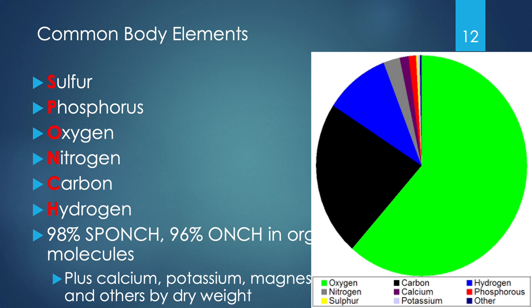This slide gives a breakdown of the common body elements. The bright lime green represents oxygen, which occupies the vast majority of the pie chart. The second highest is carbon, and the third is hydrogen. The acronym SPONGE helps recall the first letters: sulfur, phosphorus, oxygen, nitrogen, carbon, and hydrogen — making up 98% of our organic molecules. Calcium and potassium will have important roles when we discuss cell membrane permeability. Magnesium and sodium are also very important, along with others — though they take up less dry mass overall.